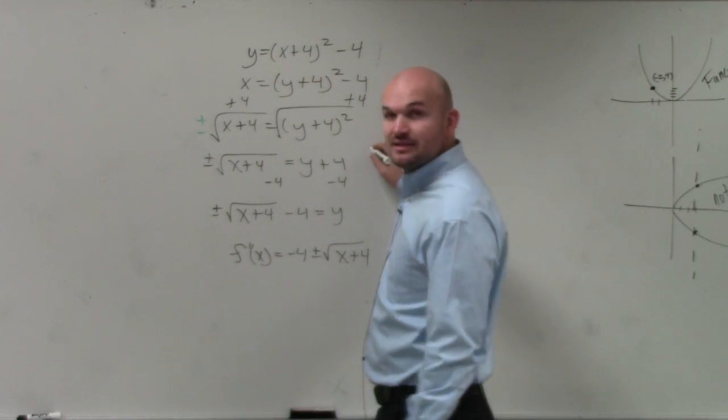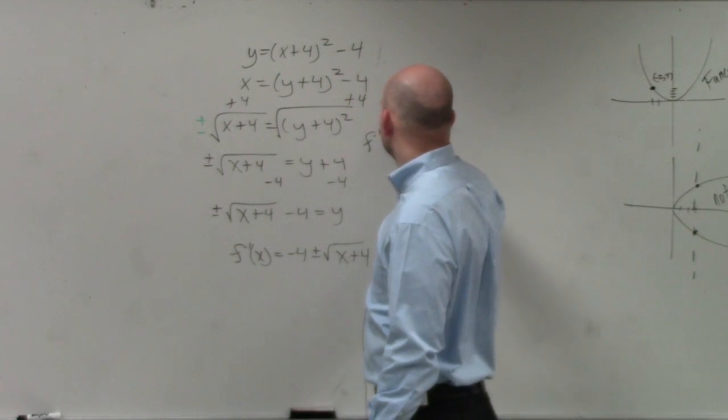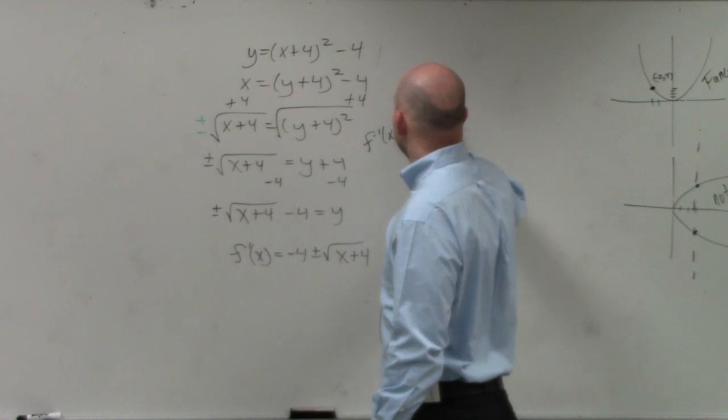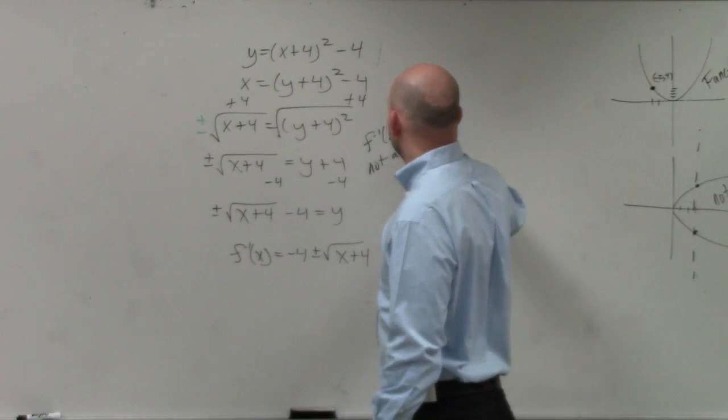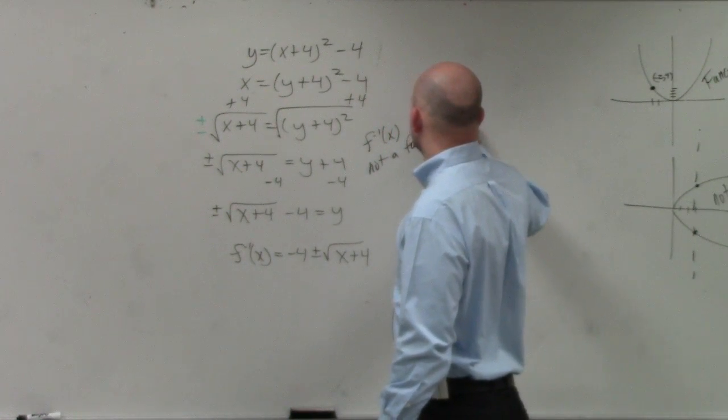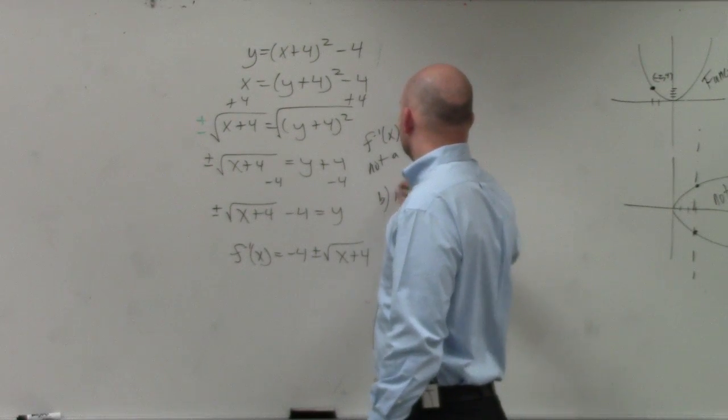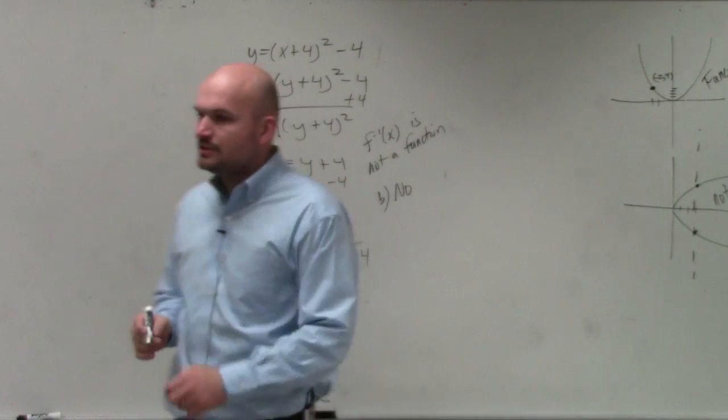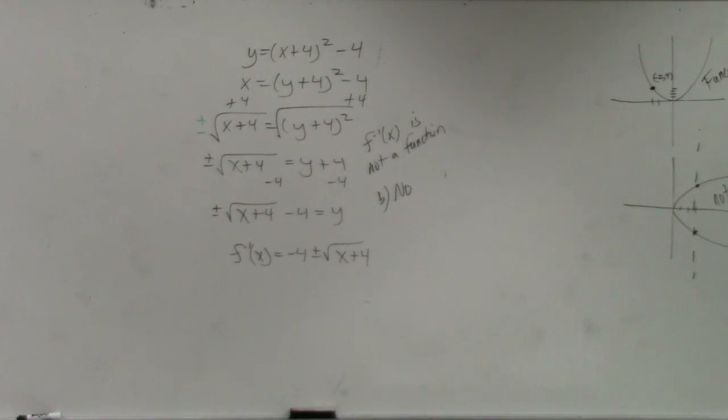So you could just basically write f inverse is not a function. Or answer for b section, it'd be no. Do you guys kind of see the difference between those two? The first example, whatever you plugged in for x, you're going to get an answer for y. That's a function.